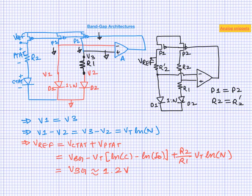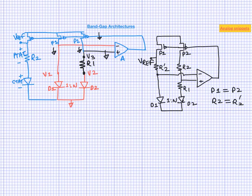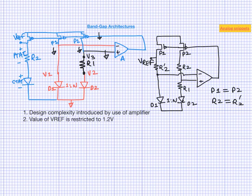This bandgap architecture is one of the most widely used, but it has some disadvantages. First is design complexity due to the amplifier — for simple applications, designing and compensating an amplifier may seem like a lot of work. Second, the value of Vref is restricted to the bandgap voltage of around 1.2 volts; if you need another voltage, say 1 volt, you need an additional amplifier.